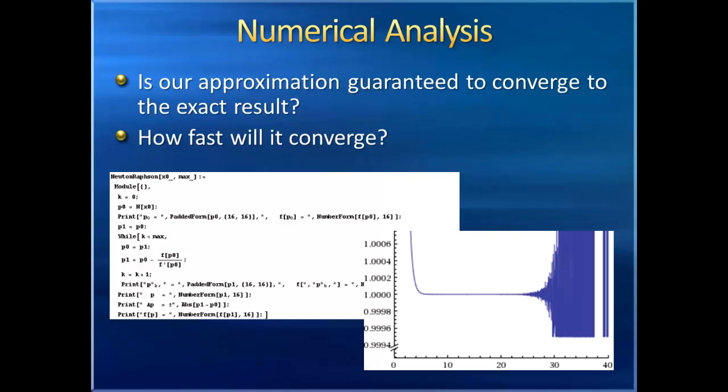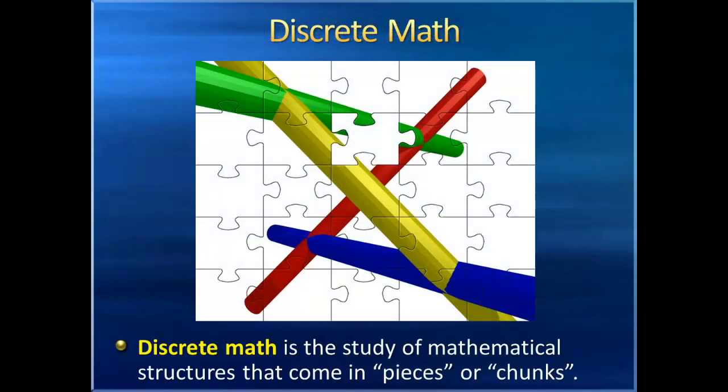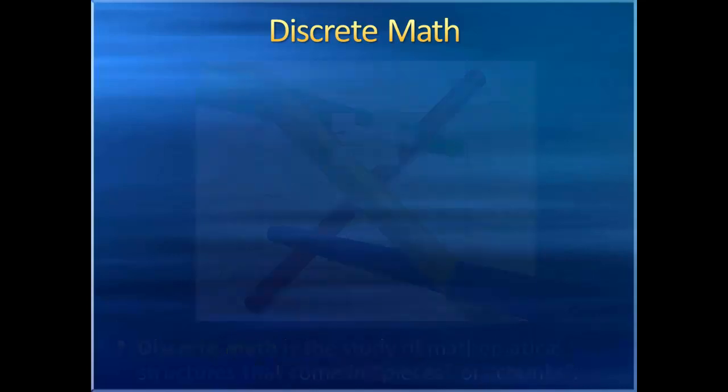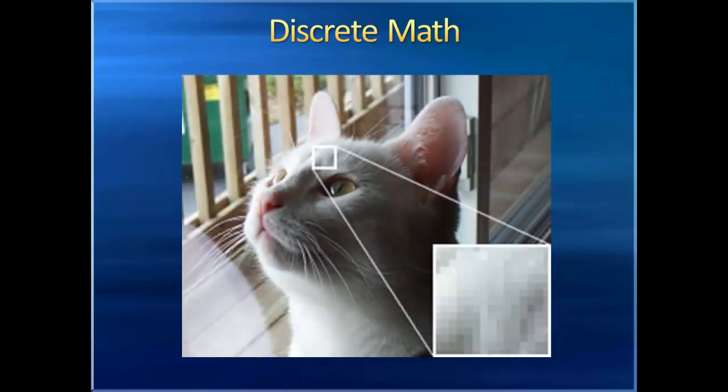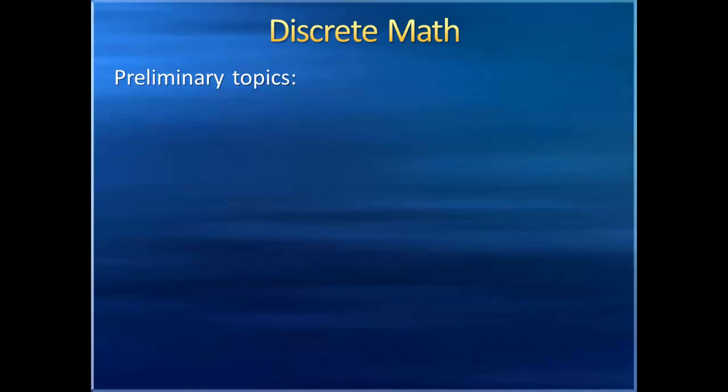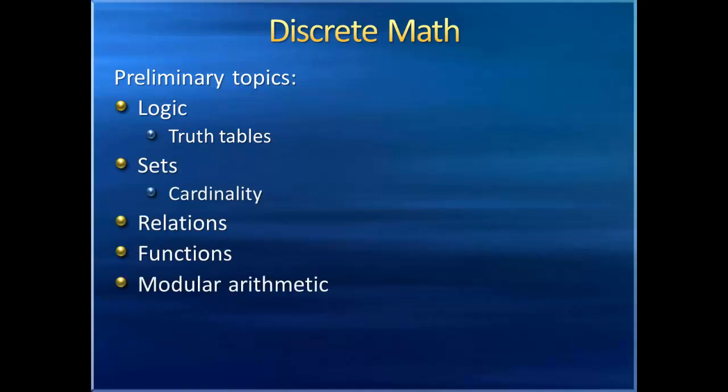So these different branches of calculus all rest firmly on the real numbers, which is a set that can be thought of as continuous. But there's also an entirely different branch of mathematics called discrete mathematics, which focuses on mathematical structures that come in pieces or chunks, such as the natural numbers or the integers. Discrete math has especially been of interest since the latter half of the 20th century, because computers store data in discrete amounts, individual zeros and ones, that cannot be further broken down. We've already covered many of the preliminary topics that are covered by an introductory discrete math class: logic and truth tables, sets and cardinality, relations, functions, and modular arithmetic, as well as proof techniques, especially proof by mathematical induction.